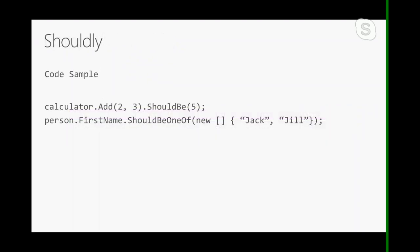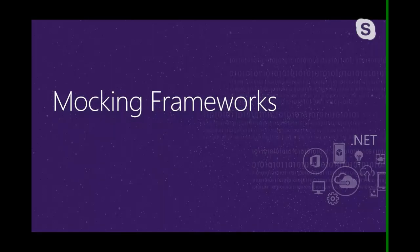Shouldly works by providing extension methods on objects. When you call a calculator.Add method, for example, you don't need to pass it to another method for assertion — you can just call the .ShouldBe() extension method on the return value. It gives a very natural way to assert conditions; it feels more natural than Assert.Equals. But hey, choose your poison.